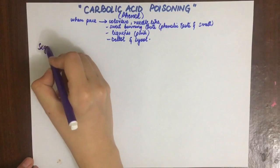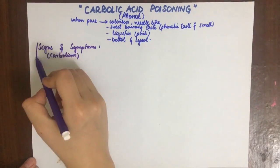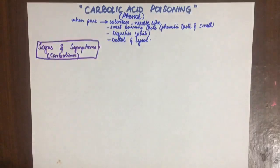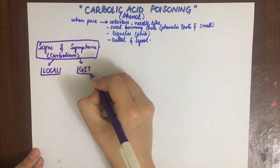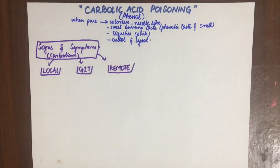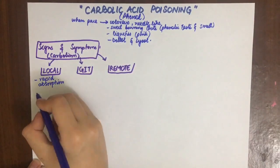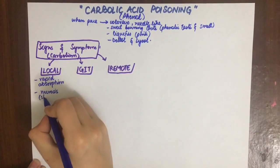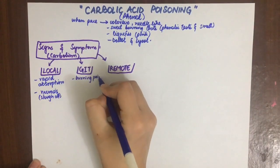The signs and symptoms of carbolic acid poisoning are called Carbolism. They are divided into mainly three types: local action, the alimentary tract or GIT tract, and remote or systemic actions. Locally, carbolic acid is very rapidly absorbed from all surfaces including intact skin, and it causes necrosis and sloughing off of tissues because it has a remarkable penetrating property.